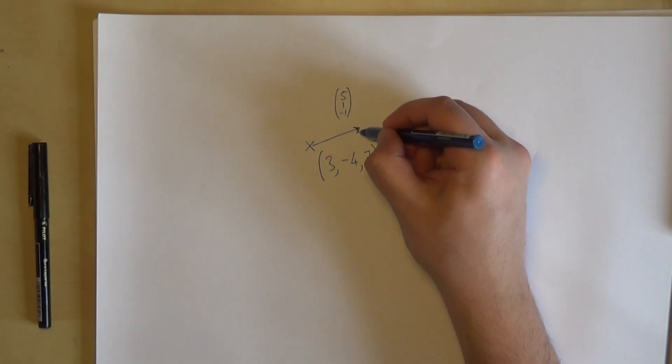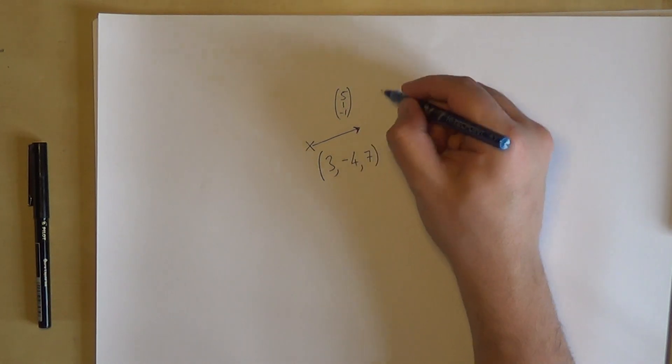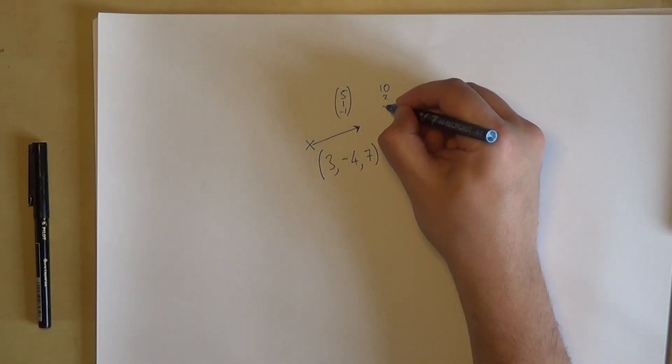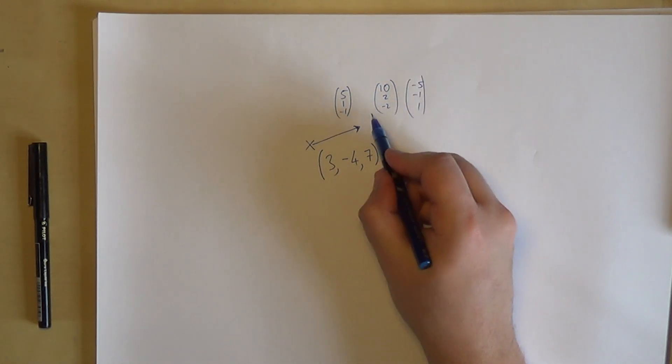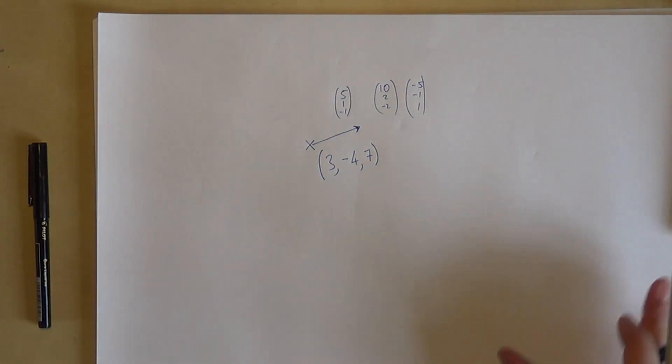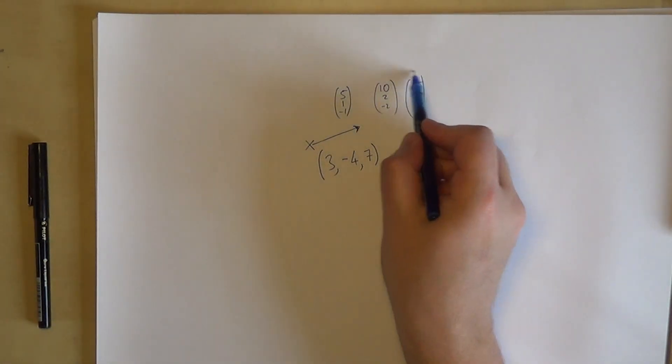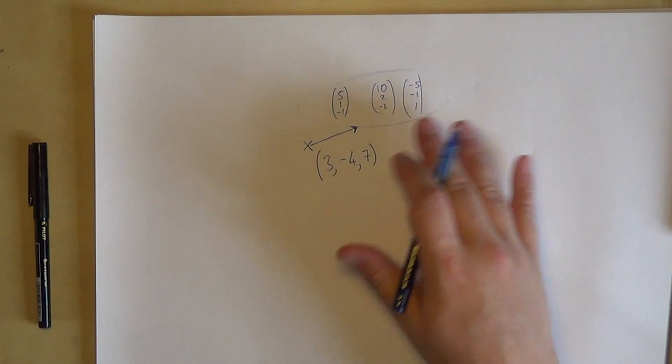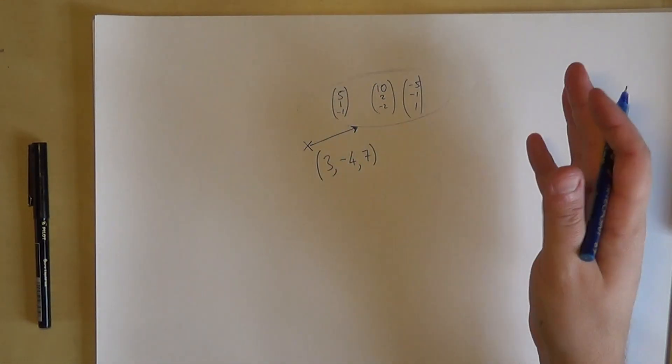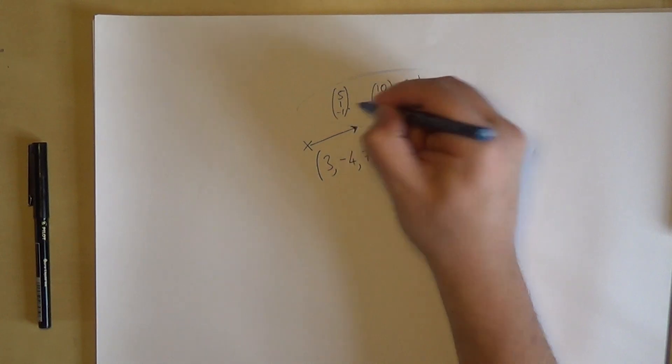But because this is a direction, the exact numbers don't matter. This could be any multiple of that. That direction is just as well described by 10, 2, negative 2, or negative 5, negative 1, 1. These three vectors are different vectors, but they're all parallel, which means they're all describing the same direction. And it's the direction that we care about. All of these are a multiple of each other, so we just pick one as the one we're going to use.